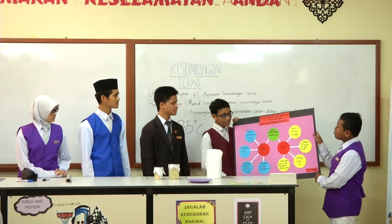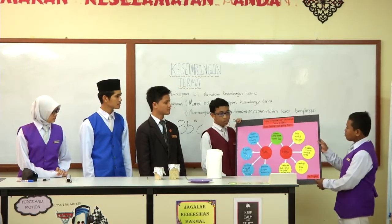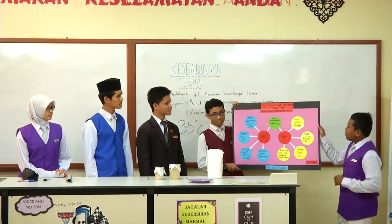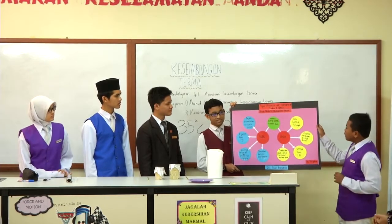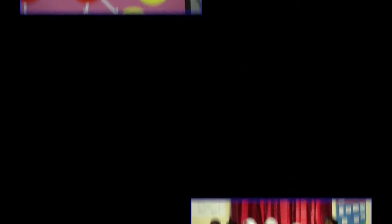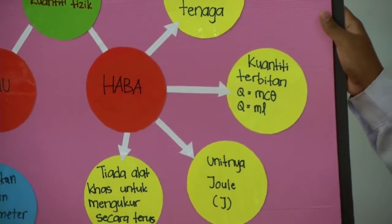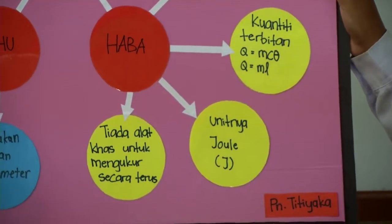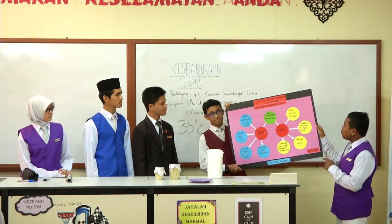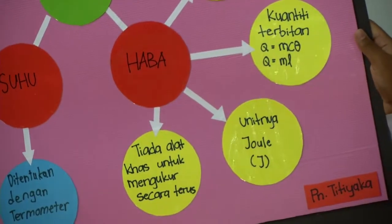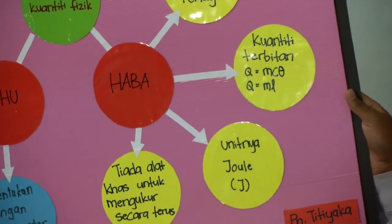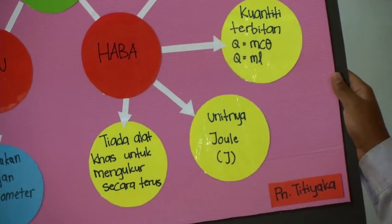Seterusnya, saya akan menerangkan tentang haba. Haba ialah satu bentuk tenaga dan merupakan kuantiti terbitan. Formulanya ialah Q = mcθ, di mana Q ialah kuantiti haba, m ialah jisim, c ialah muatan haba tentu, dan θ ialah perubahan suhu. Formula kedua ialah Q = mL, di mana L ialah haba pendam. Unit bagi haba ialah joule. Haba tidak mempunyai alat khas untuk mengukurnya secara terus.